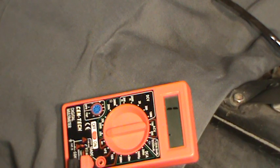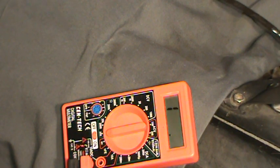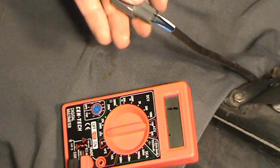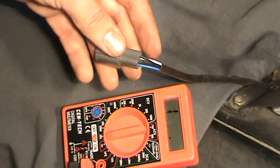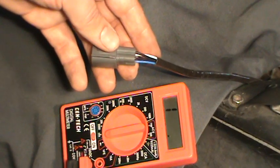A lot of people change oxygen sensors thinking it's your oxygen sensor, but in reality the fuse will blow for the heater circuit. So make sure you check the heater circuit, which is the two black wires in this case.